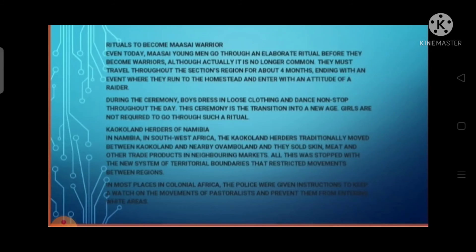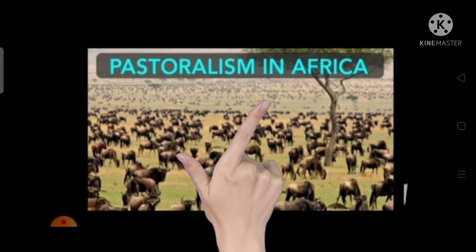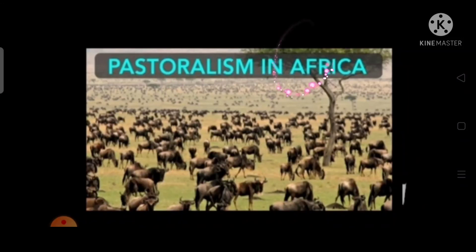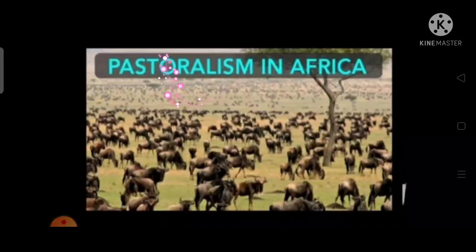In conclusion, pastoral communities in different parts of the world were affected in various ways due to changes in the modern era. New laws and new borders affected the pattern of their movement. With increasing restrictions on their mobility, pastoralists found it difficult to move in search of pastures, causing pastures and animal numbers to decline. As pasturelands disappeared, continuous overgrazing became a serious problem.